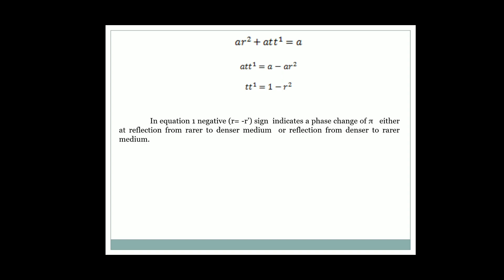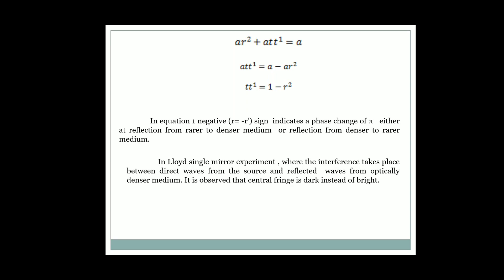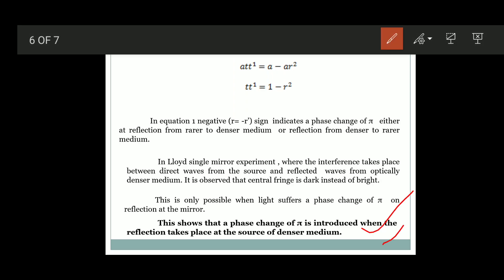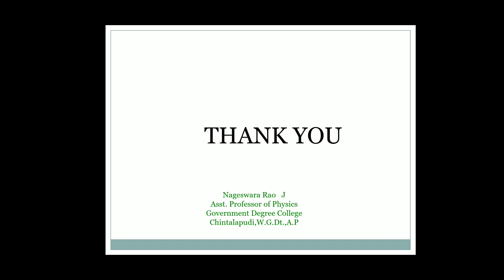Lloyd's single mirror experiment shows that when the ray is reflected at the denser medium, the central fringe is dark instead of bright. This means a phase change of pi radian occurs, or the path difference changes by lambda by 2. This is only possible when the light suffers a phase change of pi on reflection at the denser medium, confirming that a phase change of pi is introduced when reflection takes place at the surface of a denser medium. This is the proof of Stokes' law. Thank you.